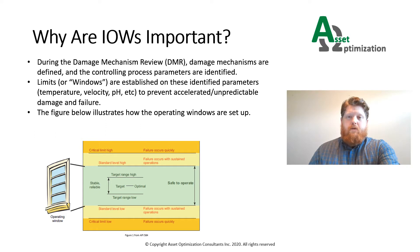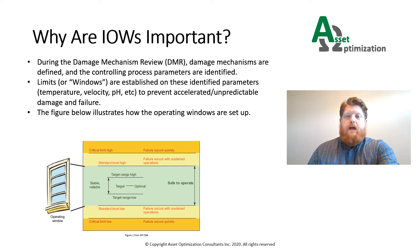Those parameters are then bounded by different windows. Integrity Operating Windows are ranges of operation that will aid in the maintenance of equipment integrity. There are typically three levels of alarms: informational high and low, standard level high and low, and critical limit high and low. Informational notifications will be sent out when the controlling parameters deviate outside the optimal range, but are still inside the safe operation window. Standard level alarms send out a notification to operations when corrective actions need to be taken within a reasonable amount of time to prevent accelerated damage from occurring. Critical high-level alarms will send out a notification that actions need to be taken as soon as possible to prevent quickly occurring failures.